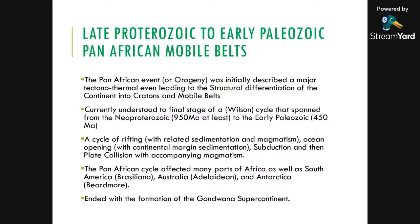The current understanding — the plate tectonic understanding — is that the mobile belts are the final stage of a Wilson cycle, where you have a previous supercontinent separating, an ocean basin opening, those ocean basins closing, and then continental collision. The mobile belts of Africa are a result of that final continental collision of different smaller continents, which are more or less like the cratons. A good understanding of the Pan-African orogeny is that it brought all the different cratons together — which were like separate continents — and those boundaries are the collision boundaries with all the deformation involved.